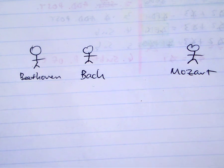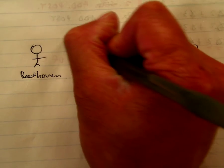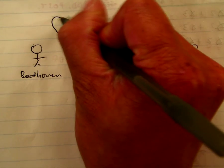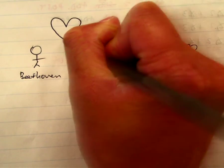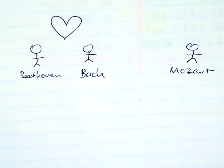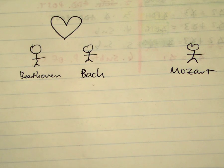Beethoven and Bach are in love — they're in love with music. They sit at their instruments and they just stare into space, they're so in love.